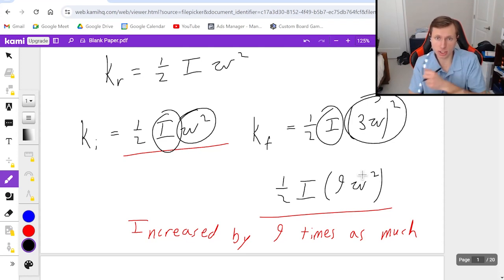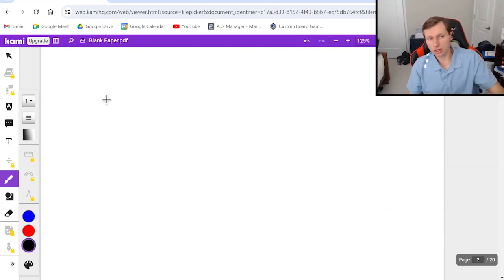So basically what I'm saying is when she's pulling her arms in and she's spinning faster her moment of inertia I is going to go down. And if you don't know why that's the case then we're going to use conservation of angular momentum to prove that.